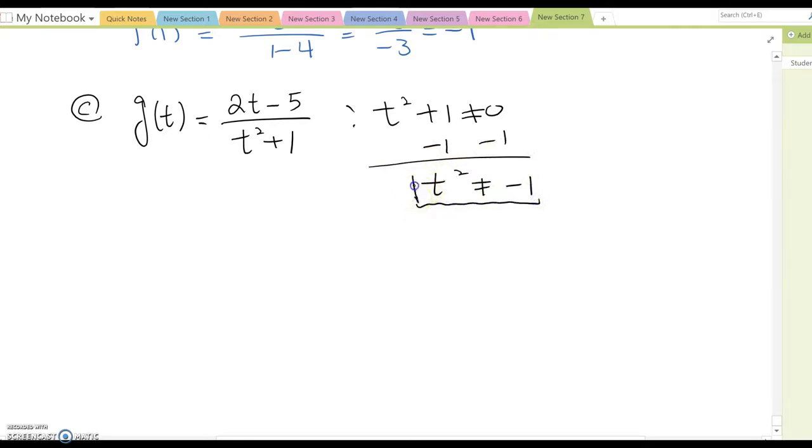When you look at here, after you complete all this problem using the square root, then you will get t cannot be plus and minus i. Because it is not the real term, our conclusion is this is the continuous function. There is no limitation for this particular function.